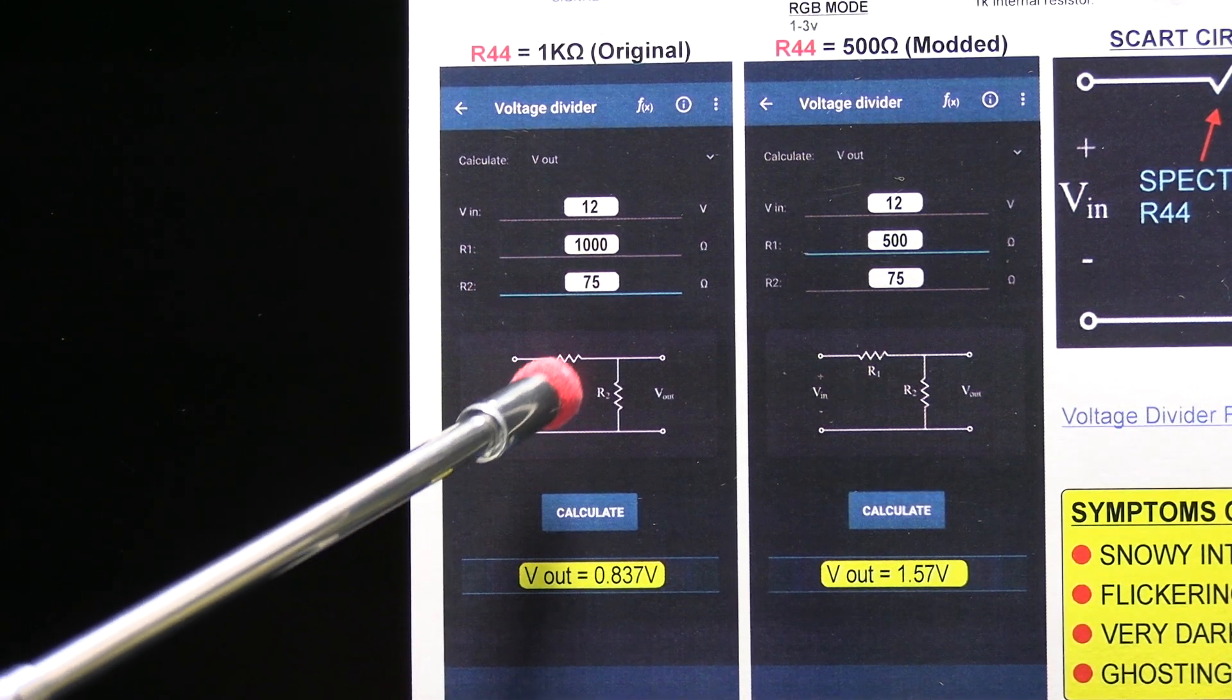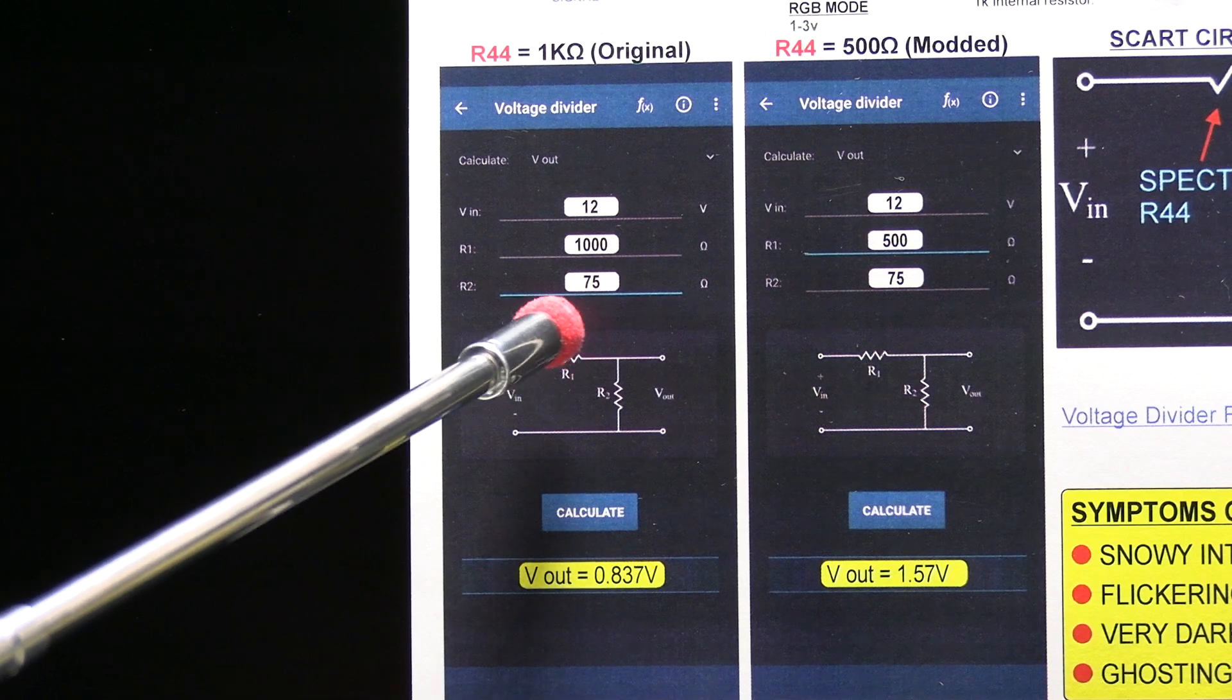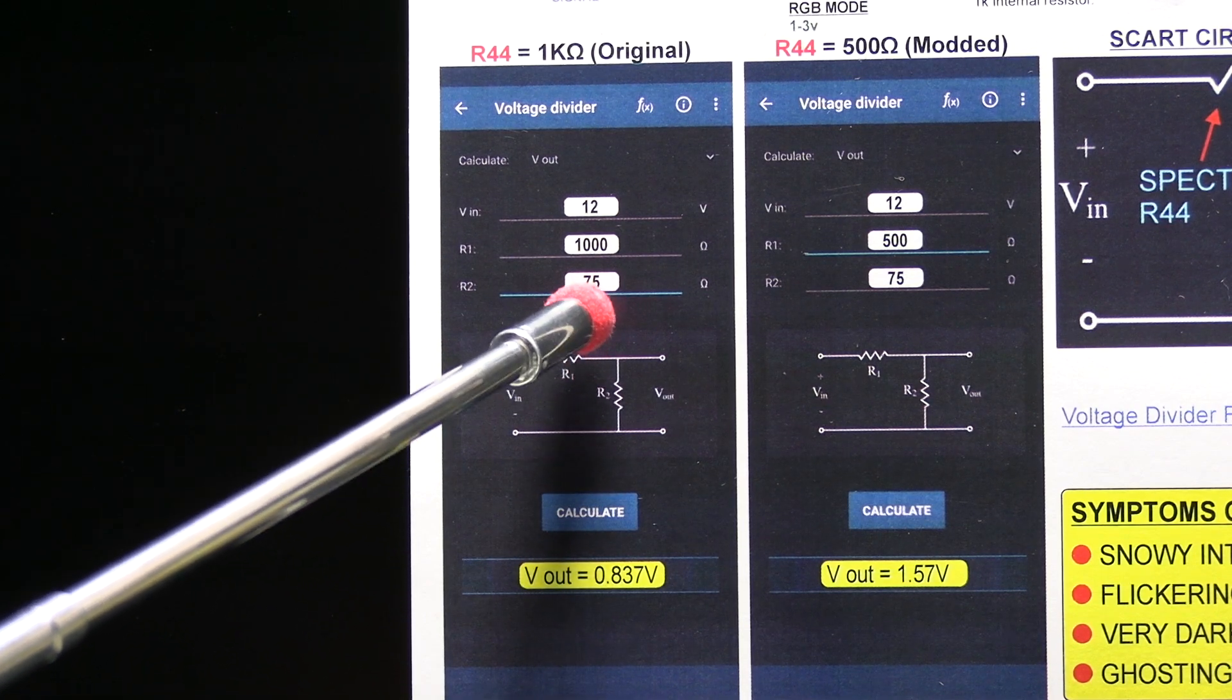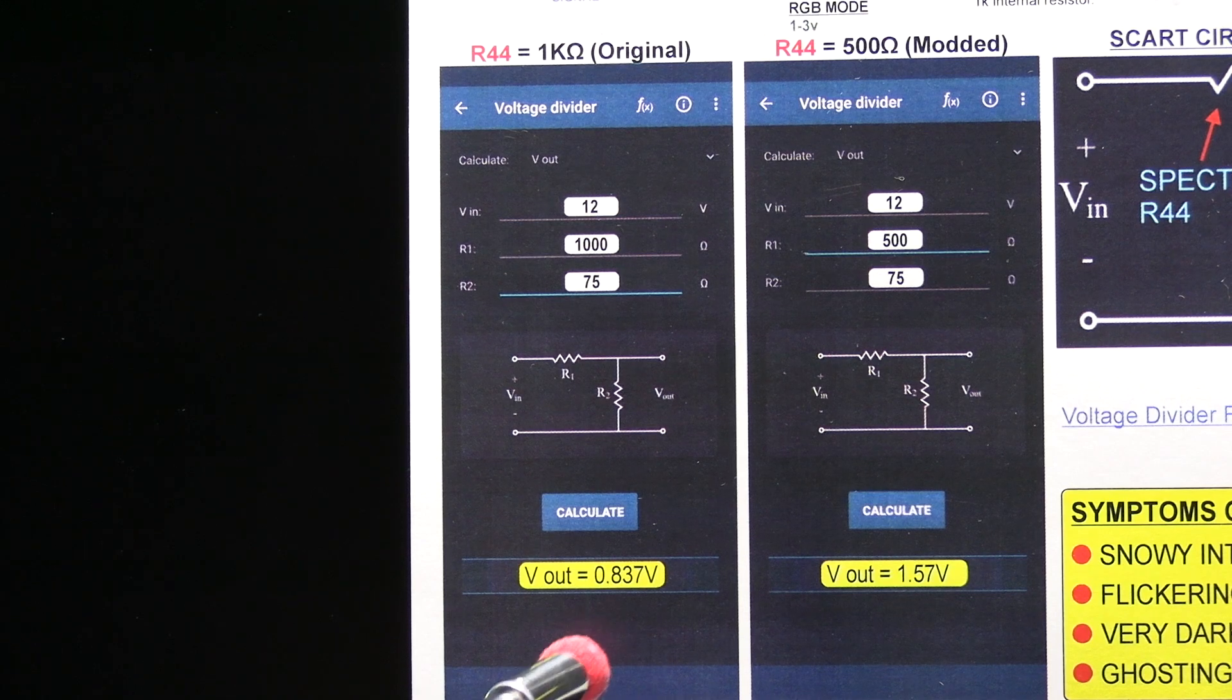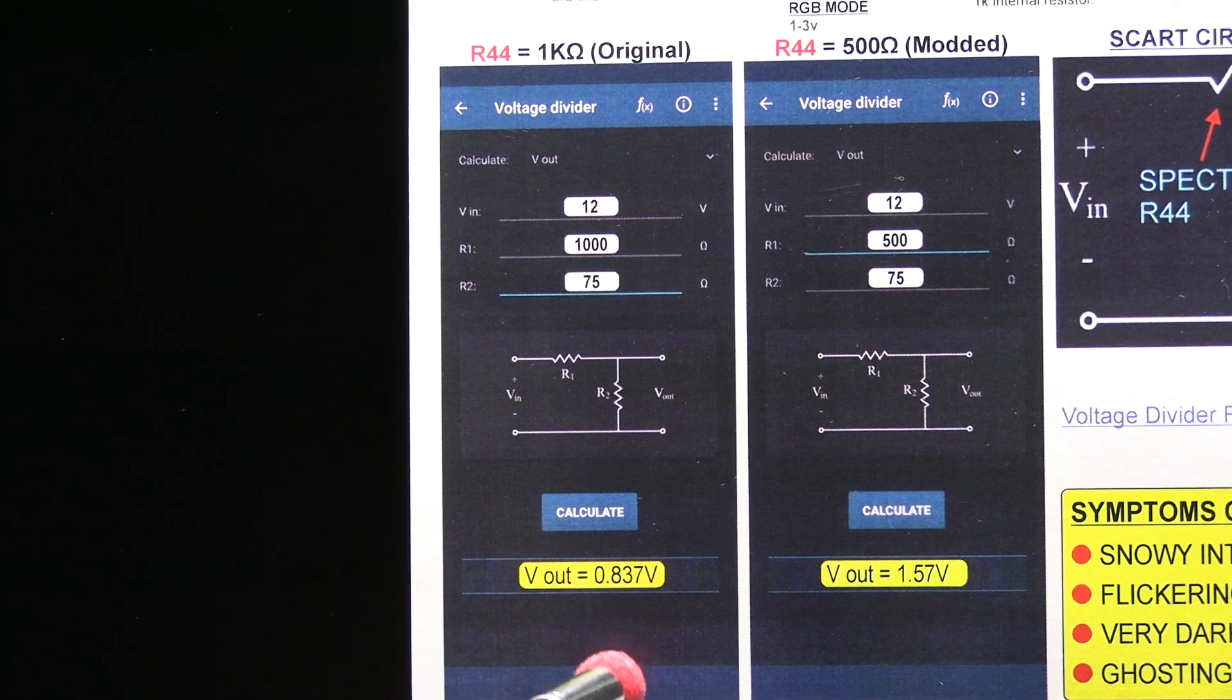And R2, which is the input impedance of the blanking signal, is 75 ohms. So the calculation for that is a voltage output of 0.83.